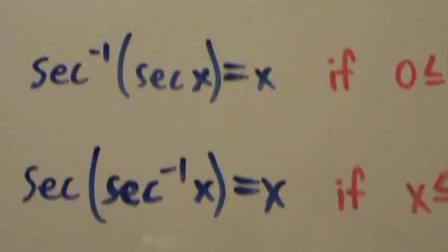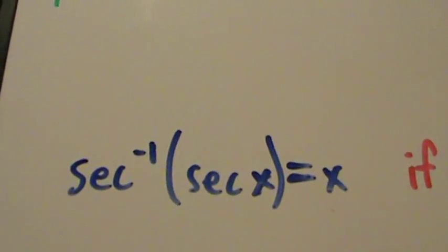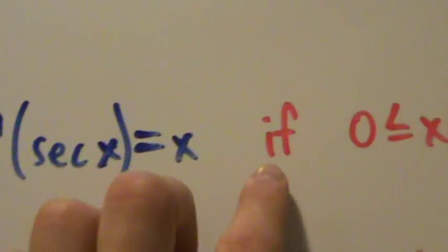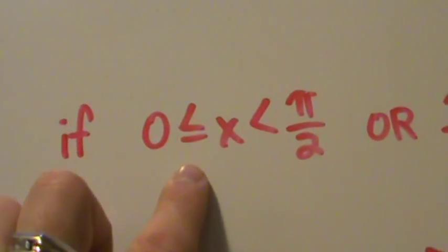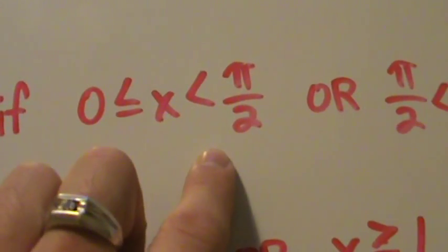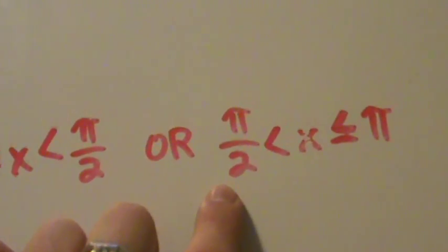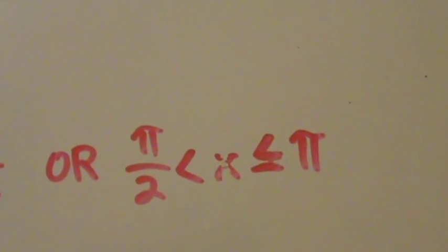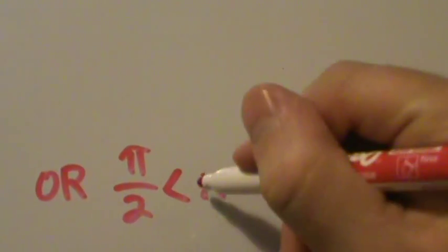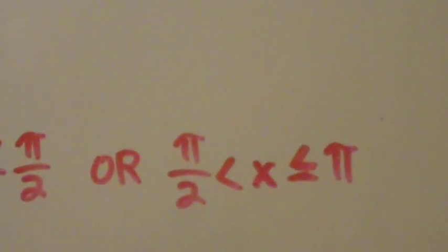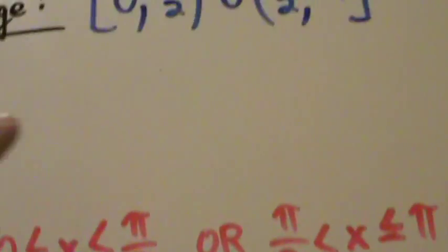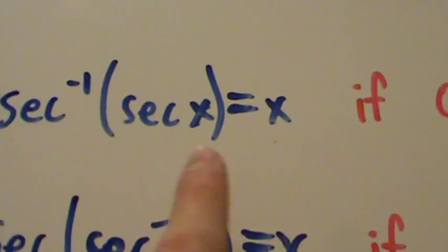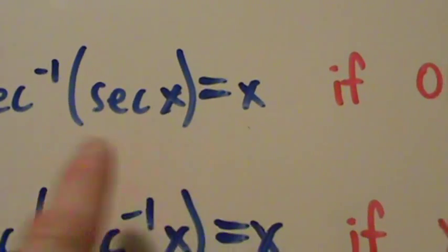Some cancellation properties. The inverse secant of the secant of x equals x — we can just cancel like that — provided zero is less than or equal to x less than pi over two, or pi over two is less than x less than or equal to pi. So if x is in either of those intervals, then we have this cancellation property.